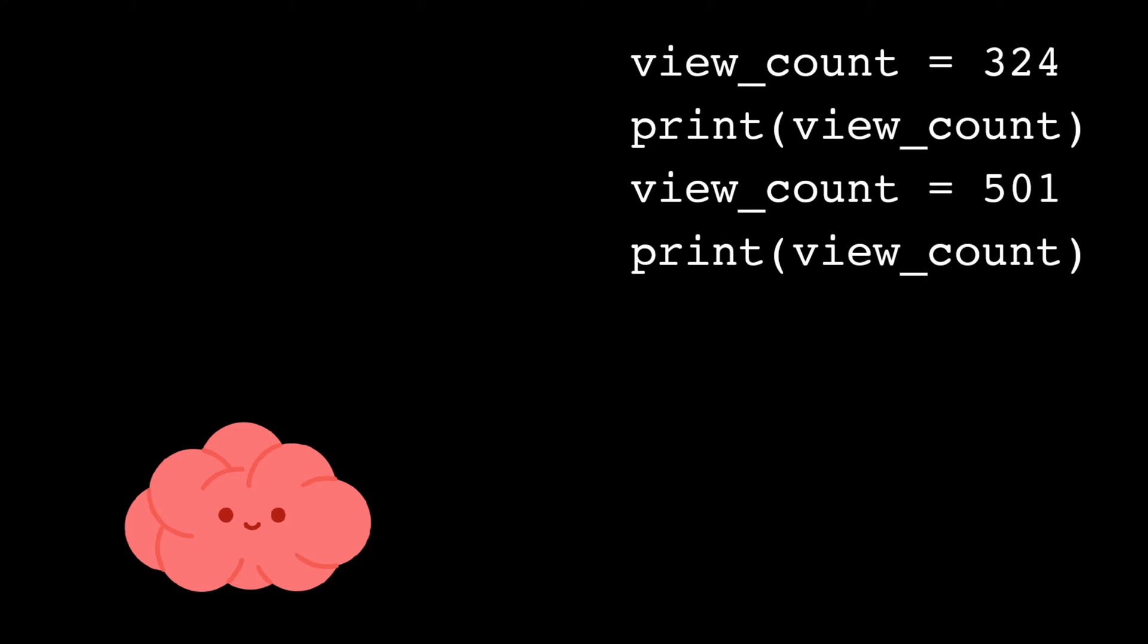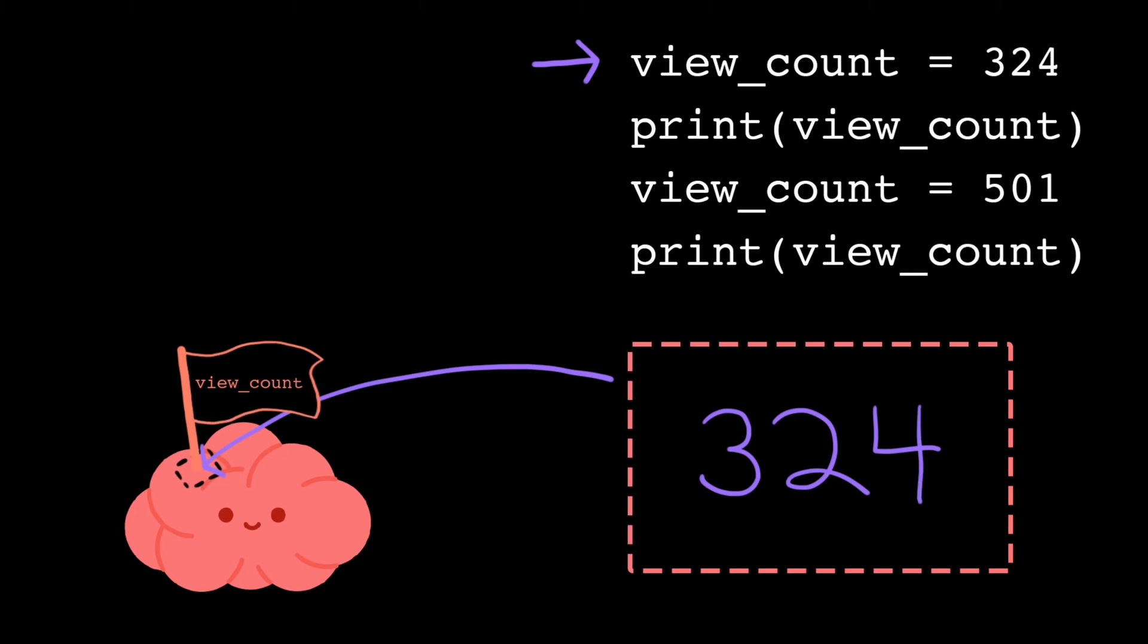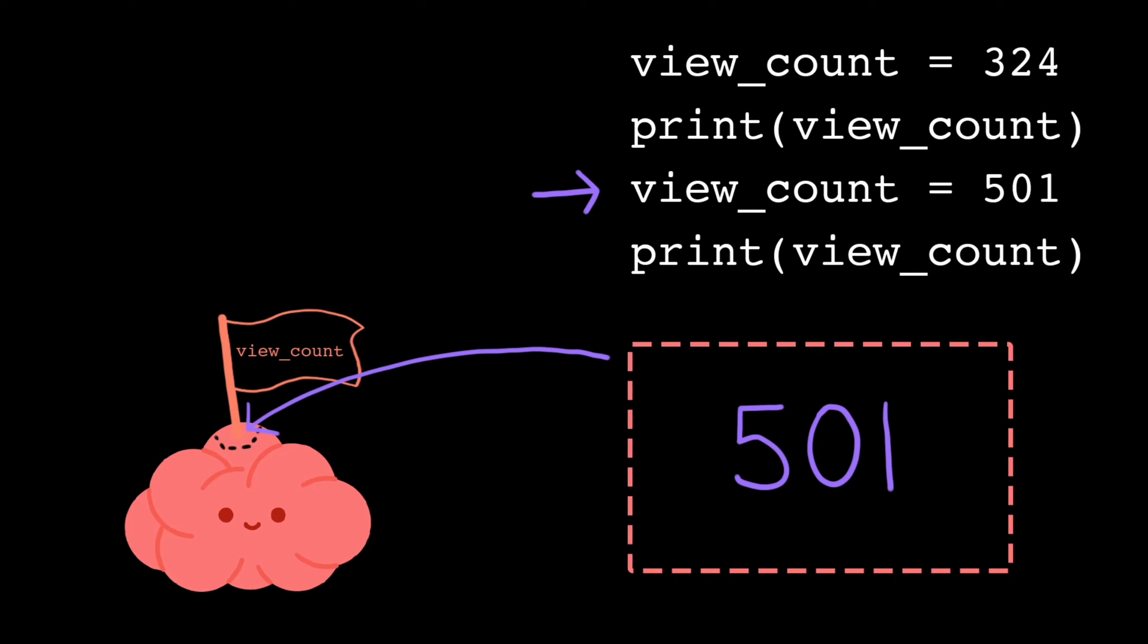Remember, instructions in a program execute in order, so the value stored in a certain variable might be different at different points in the program. For example, after the first line executes, the location view_count contains the value 324. But after the third line executes, the location view_count now contains the value 501.